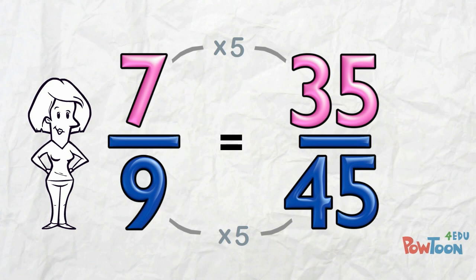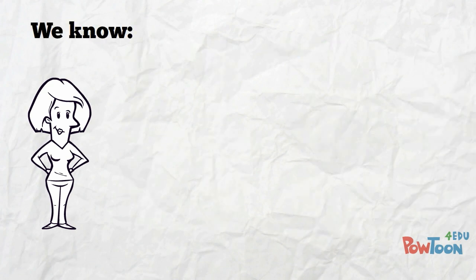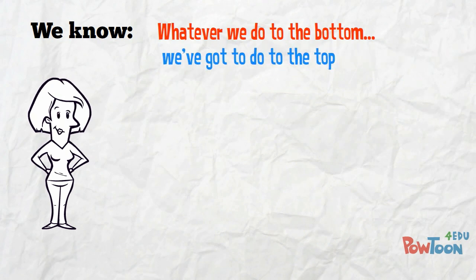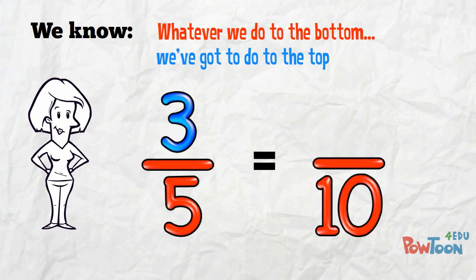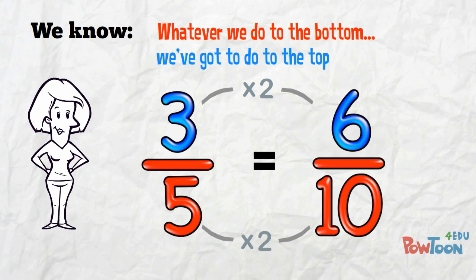All we're doing with this kind of problem is applying logic. We know that whatever we do to the bottom, we've got to do to the top. So we find out what was done on the finished part of the fraction, and then we do the same to the unfinished part. Finish the operation, and we're done!